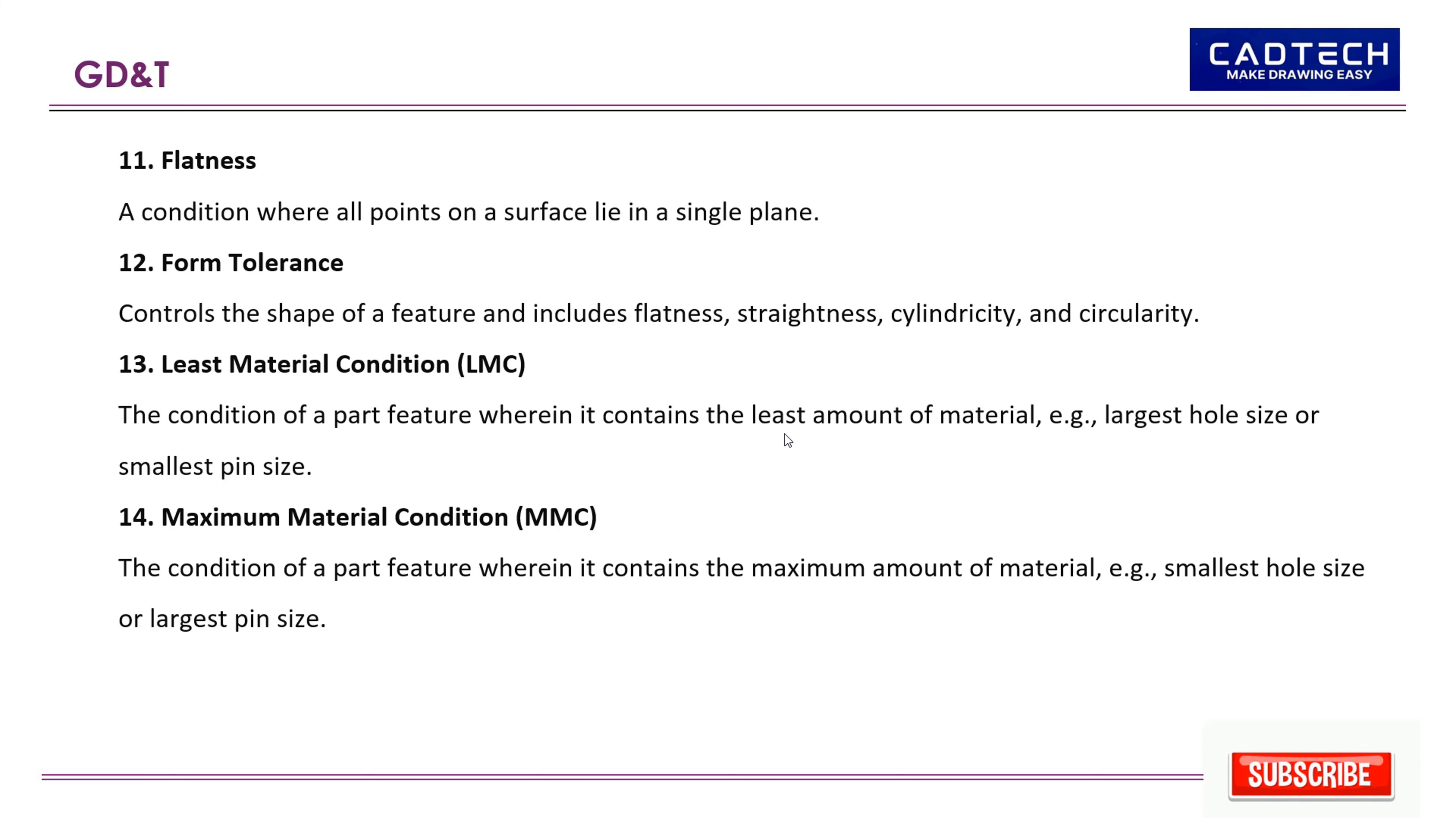15. Orientation tolerance: Controls the orientation of features relative to each other. It includes parallelism, perpendicularity, and angularity. 16. Parallelism: A condition where all points on a surface, or line elements of a feature, are equidistant from a datum plane or axis.